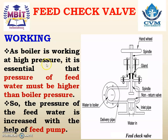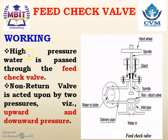As the boiler works at high pressure, it is essential that the pressure of feed water must be higher than the boiler pressure. If it is not, water will not enter the boiler and there can be a reverse flow — water from the boiler can come out. So the pressure of feed water is increased with the help of the feed pump. Initially water enters the feed pump where pressure is increased, and high pressure water is then fed into the feed check valve.